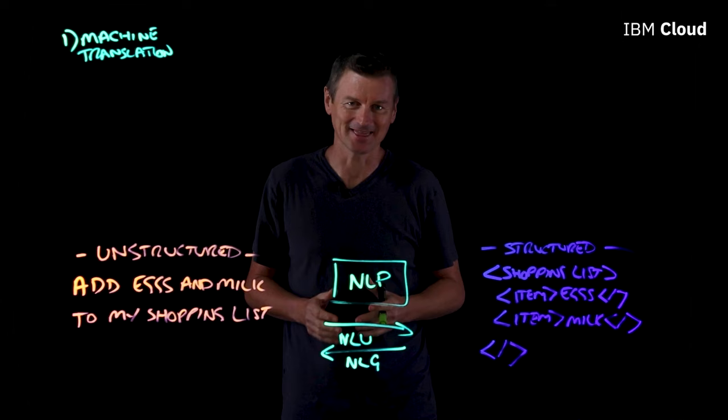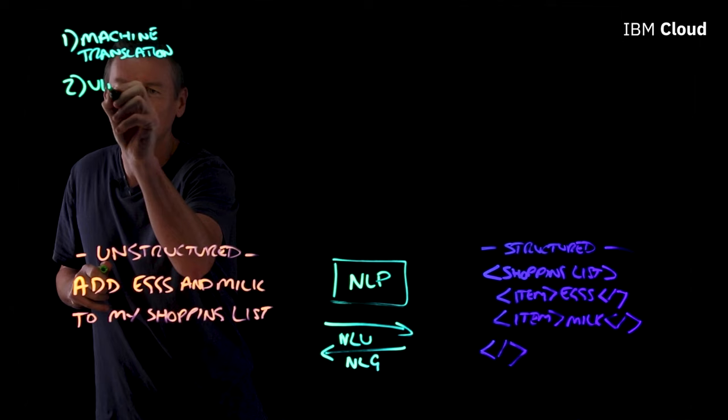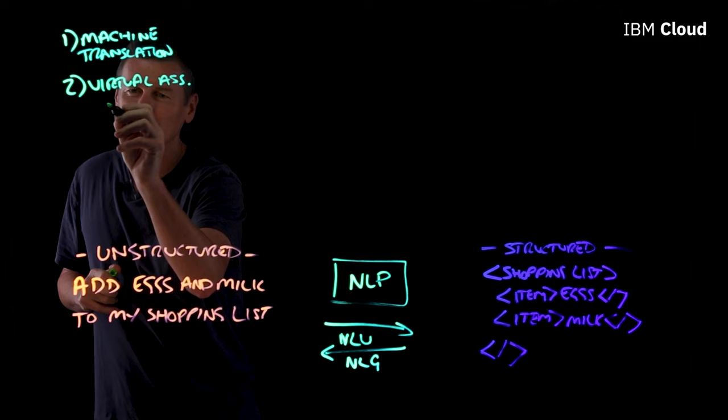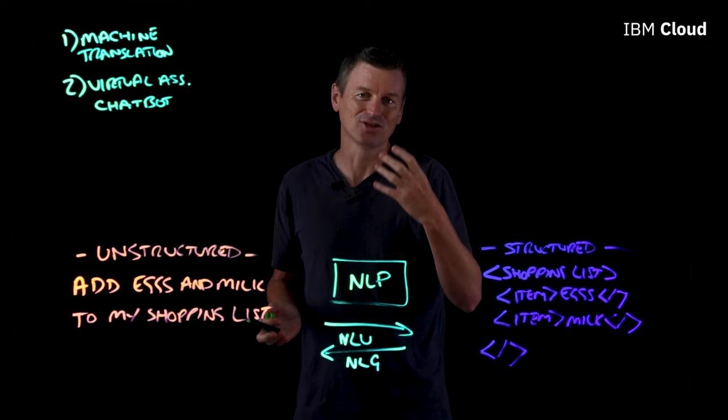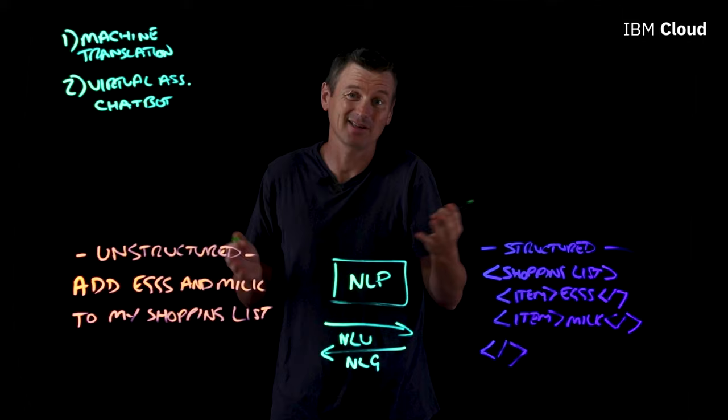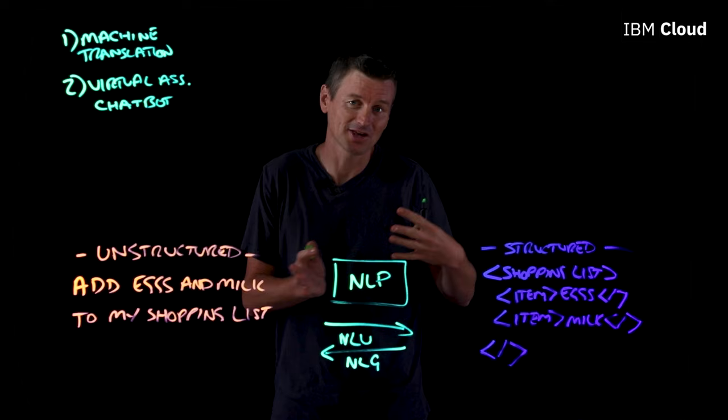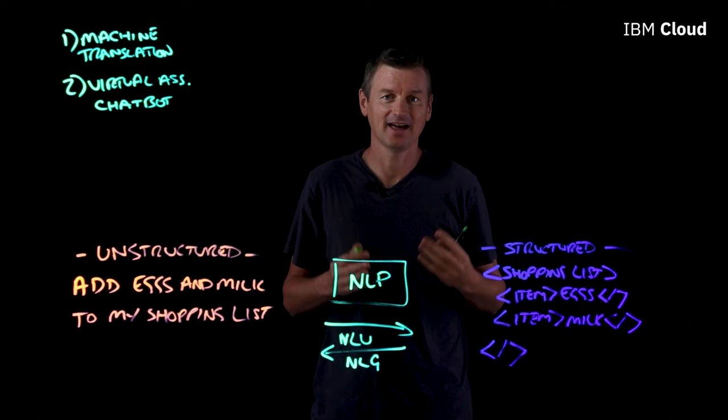The second use case relates to virtual assistants and also to chatbots. A virtual assistant — something like Siri or Alexa on your phone — takes human utterances and derives a command to execute based upon that. A chatbot is something similar except in written language, taking written language and using it to traverse a decision tree in order to take an action. NLP is very helpful there.